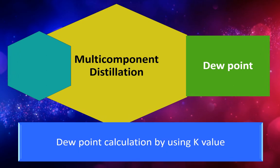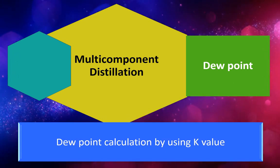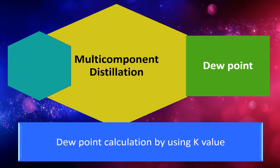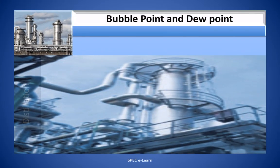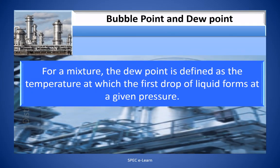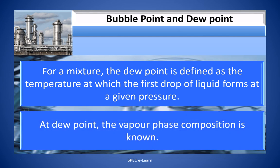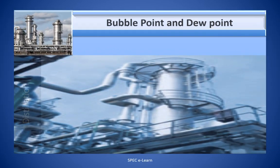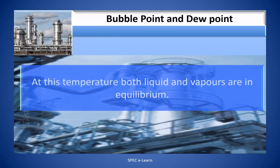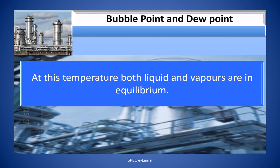Dew Point: Dew point calculation using K values. For a mixture, the dew point is defined as the temperature at which the first drop of liquid forms at a given pressure. At dew point, the vapor phase composition is known. At this temperature, both liquid and vapor are in equilibrium.